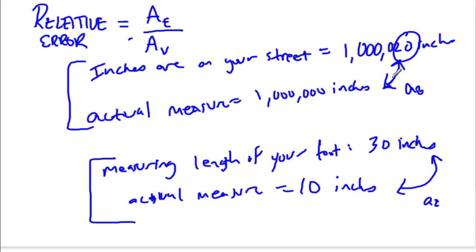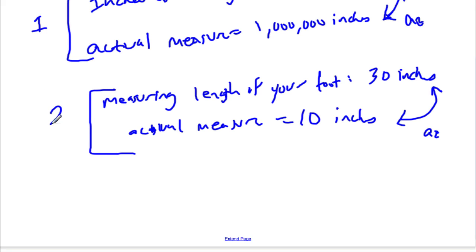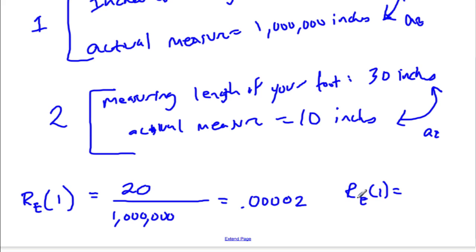And we have our absolute errors in both cases. They're both 20 inches off, which we found by subtracting what you found versus the actual measure. So let's find the relative error of both situations. Let's call this situation 1 with the measure of the street, and this situation 2 with the measure of your foot. So the relative error of situation 1 equals, well, we had an absolute error of 20 inches. But the accepted value for the length of your street was a million inches. So in fact, this is a 0.00002 error, right? 20 divided by a million. And if you want to write this as a percent, you could do the relative error times 100, and you would get a 0.002 percent error. Very small error.